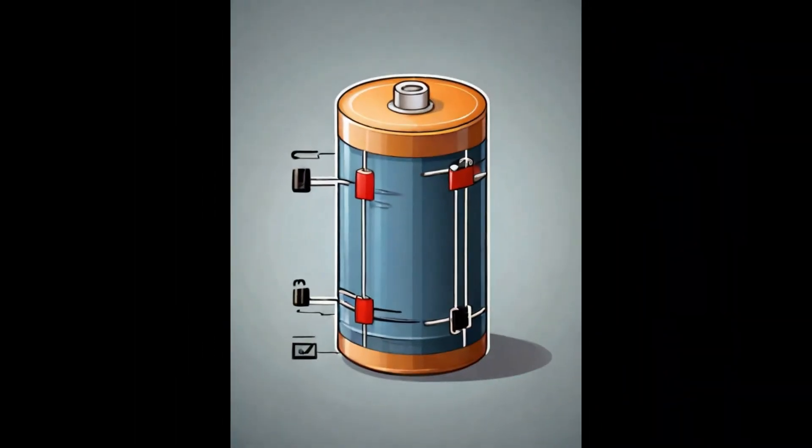A capacitor is an electronic component that stores and releases electrical energy in a circuit. It consists of two conductive plates separated by an insulating material known as a dielectric. The basic working principle of a capacitor involves the storage of electrical charge on its plates. Here's a step-by-step explanation of how a capacitor works.